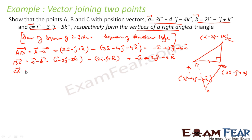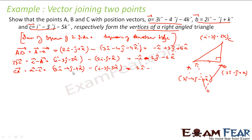CA vector = A − C. A vector is 3i − 4j − 4k, minus C vector i − 3j − 5k. Solving: (3−1)i = 2i, (−4+3)j = −j, (−4+5)k = +k. So I have found AB, BC, and CA vectors. Let us find the magnitudes.